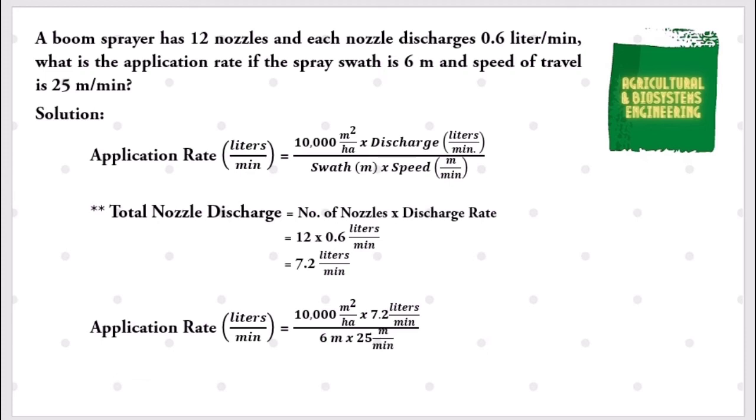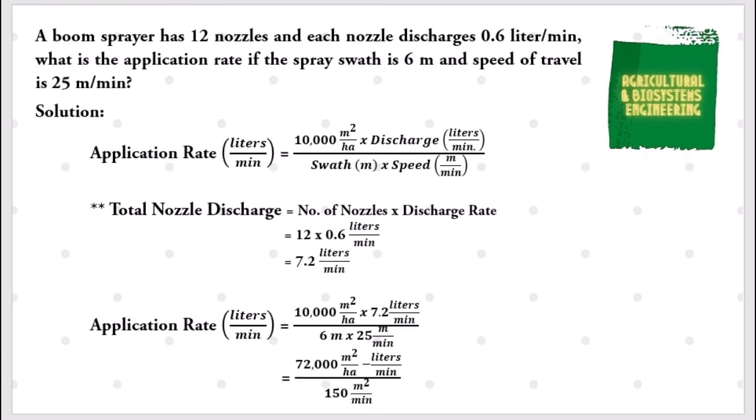We simply solve and we have 72,000 square meter per hectare by liters per minute all over 150 square meters per minute. The square meter per minute unit will be canceled out, giving us a final answer for our application rate of 480 liters per hectare.